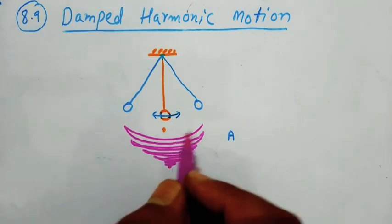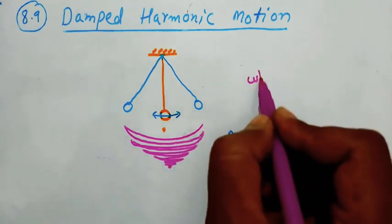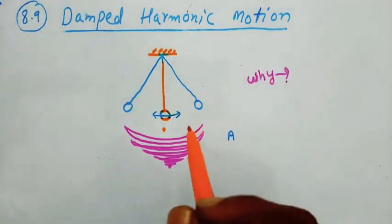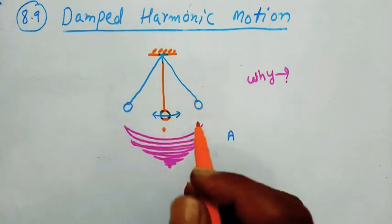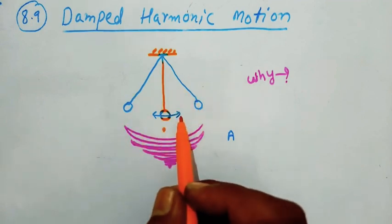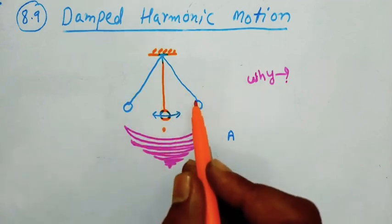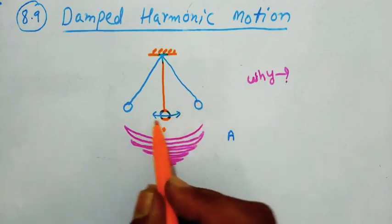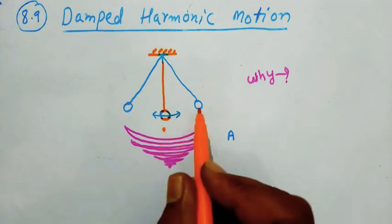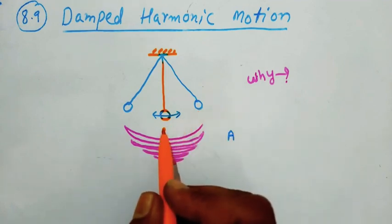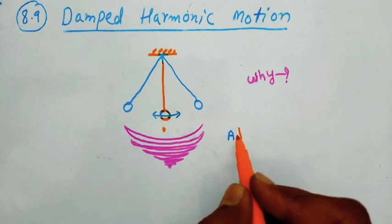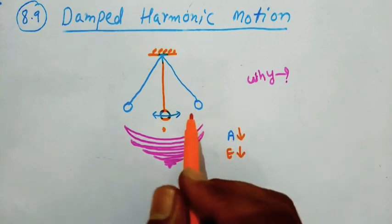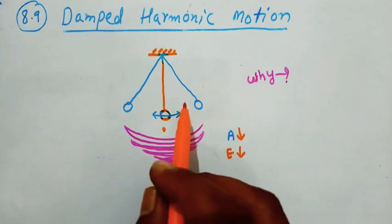Why? Due to the presence of air resistance, which opposes the motion of the bob. So the energy of the bob gradually decreases, and it is zero when the bob reaches the mean position. So here amplitude decreases and energy also decreases. This type of motion is known as Damped Harmonic Motion, and here the pendulum executes damped oscillations.